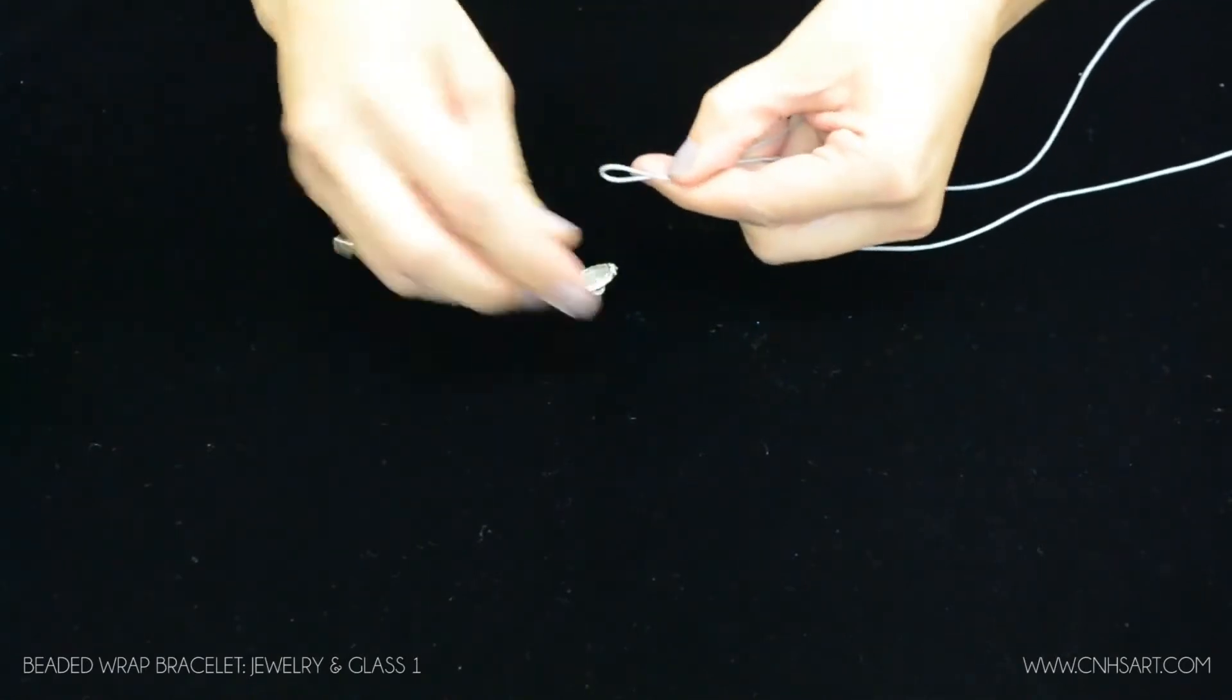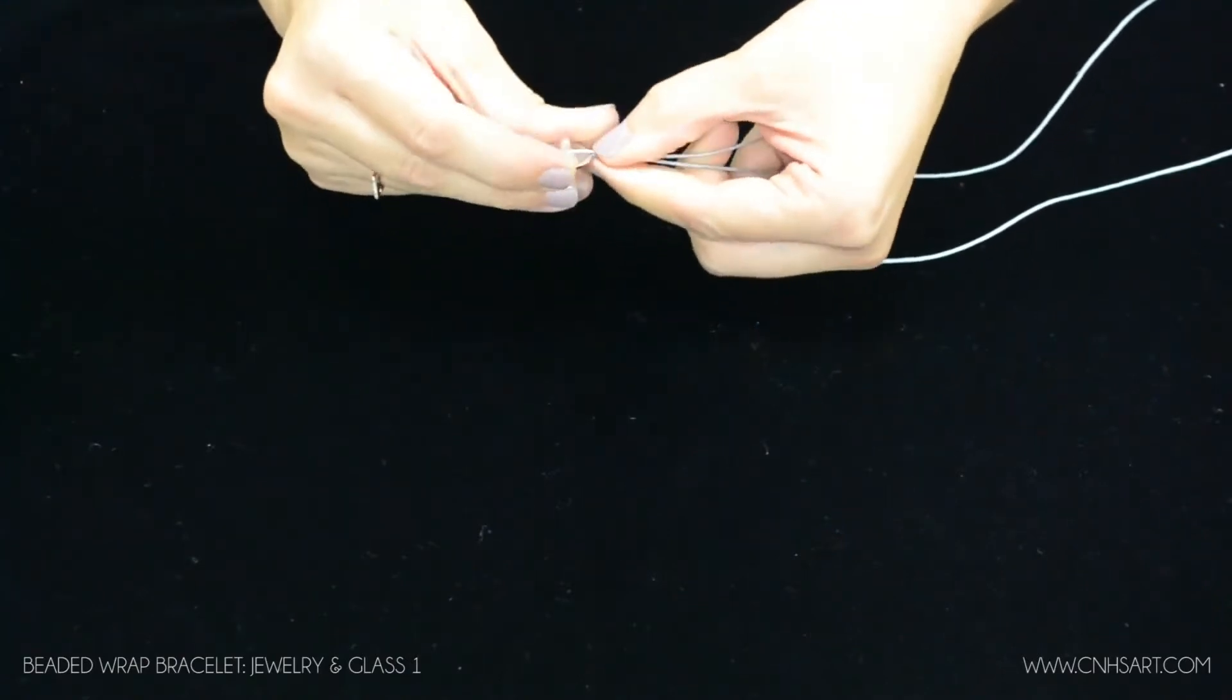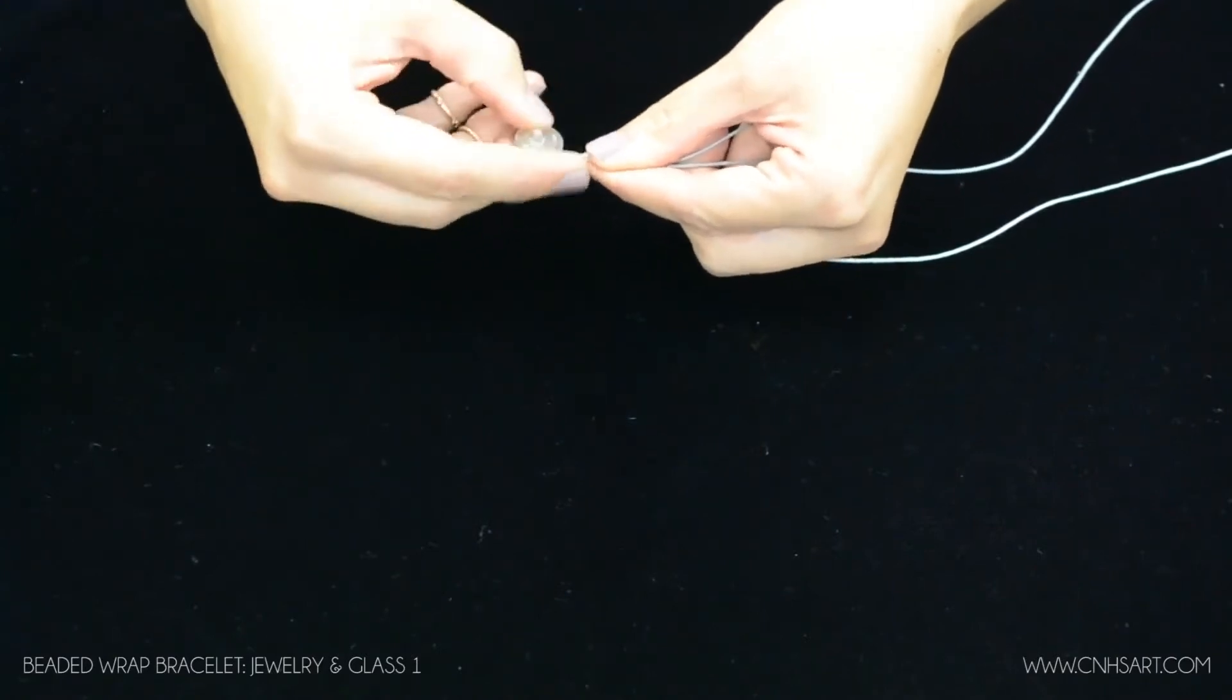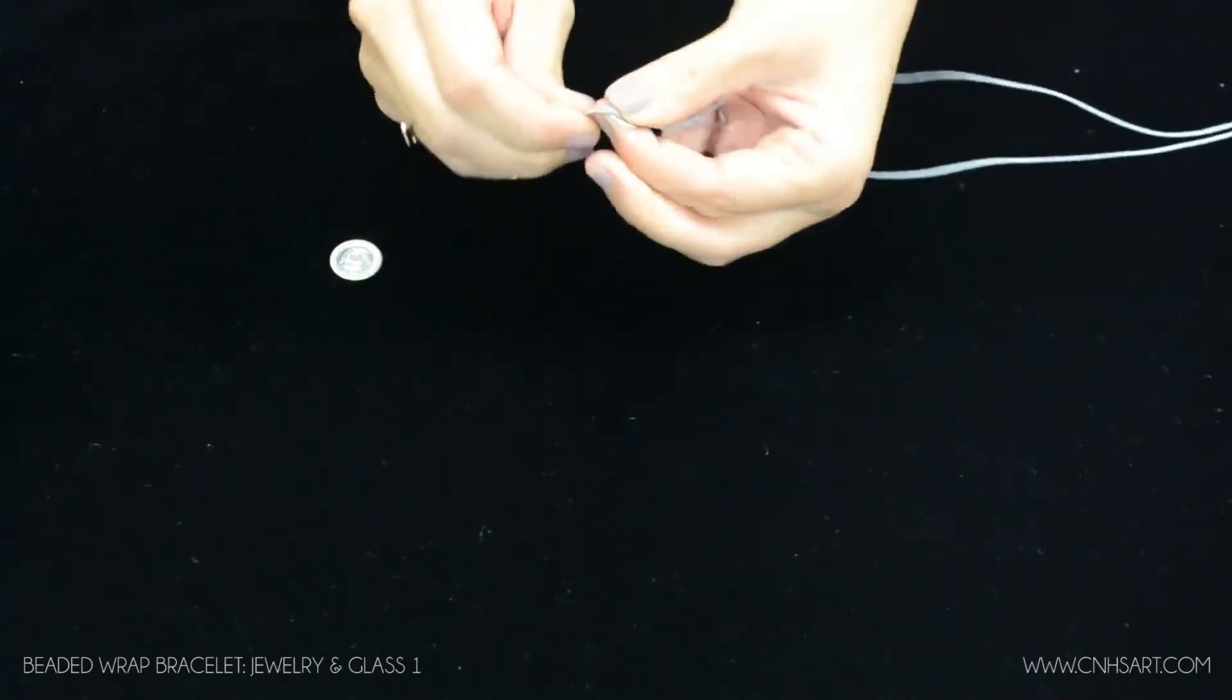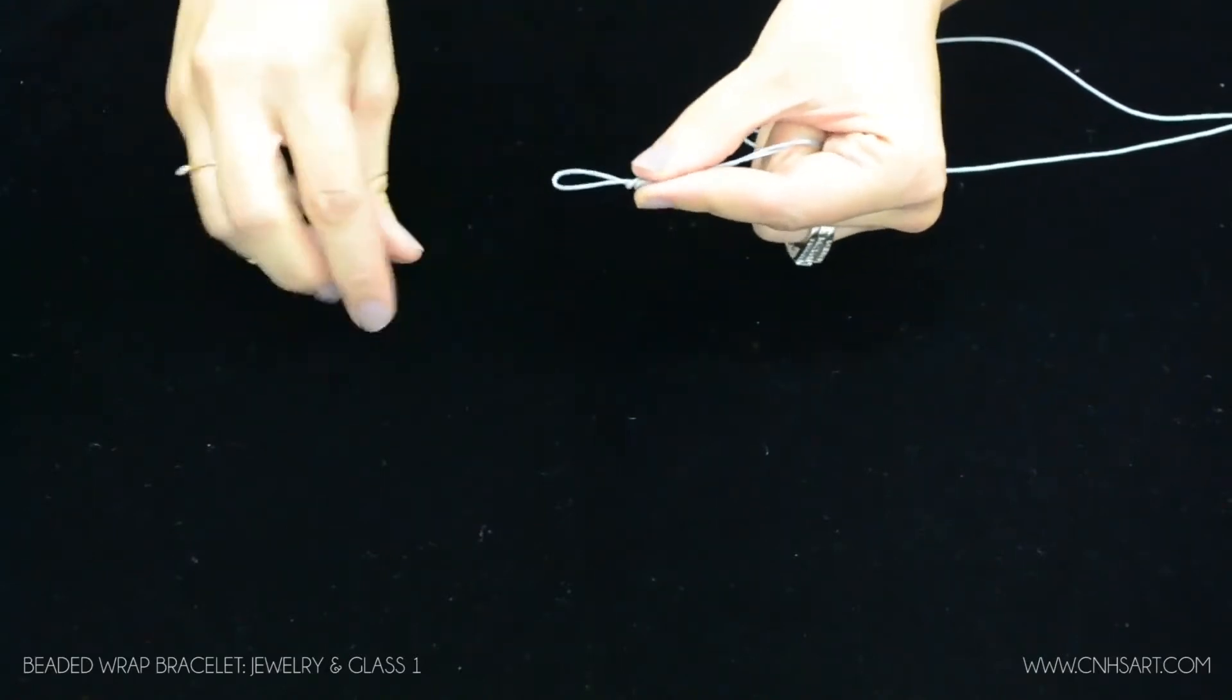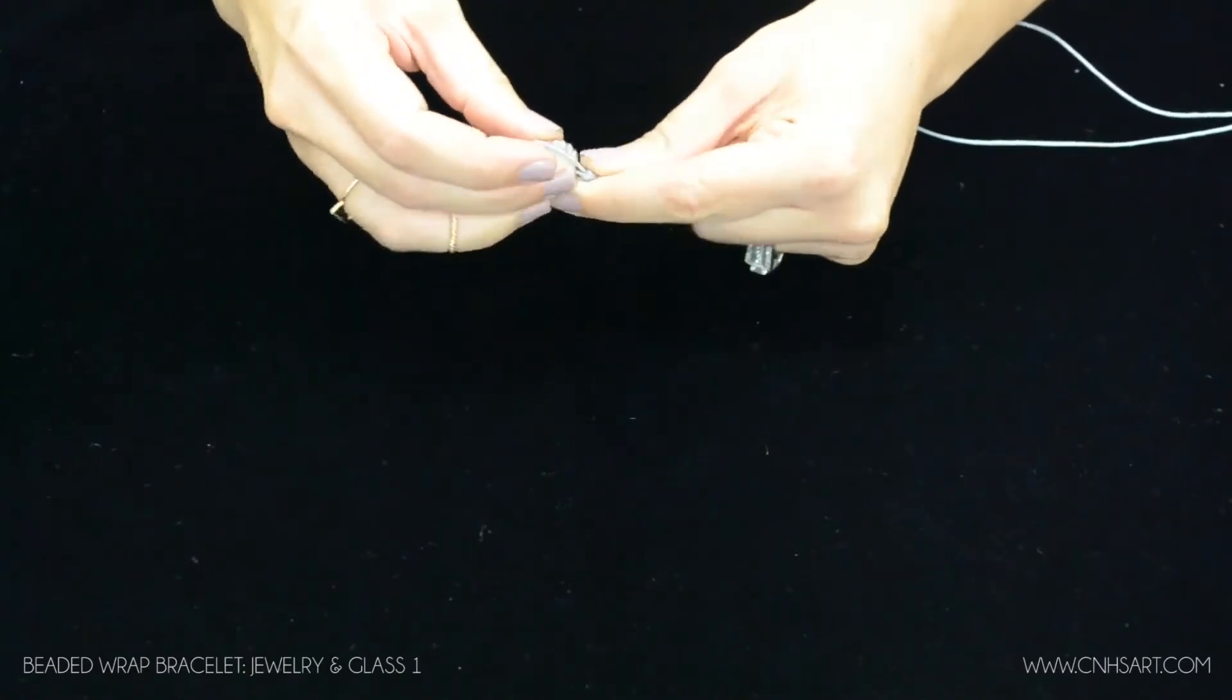So to begin they're going to make a loop and they have to slide the button in to make sure that the loop is large enough for that button to hook into at the end because that serves as your clasp. So once you make the loop you're just going to knot it and before you pull it tight just double check that that button's going to fit. Okay perfect.